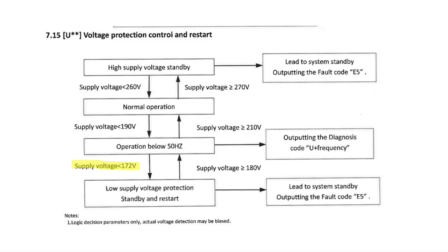We also have a voltage protection control and restart. We're not going to be controlling the frequency of the compressor, but we'll shut the system down any time it's above 270 or below 172 volts.